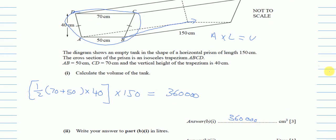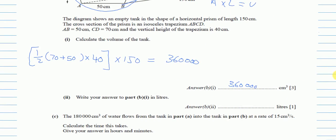Part two: write your answer in liters. To convert from centimeter cube to liters, divide by 1000. So 360,000 ÷ 1000 = 360 liters.